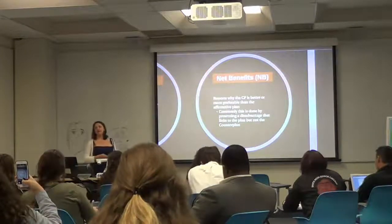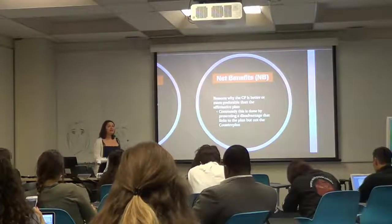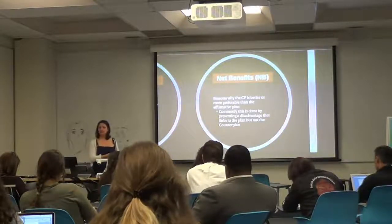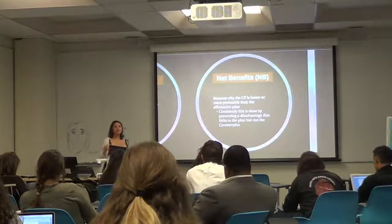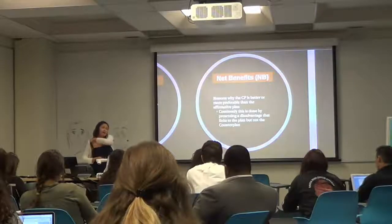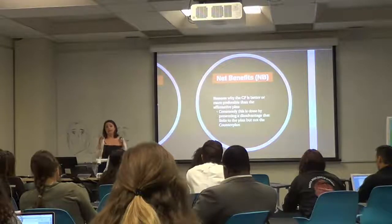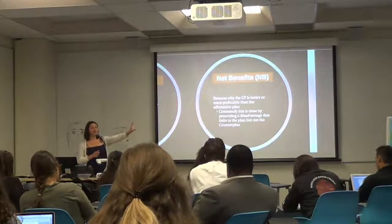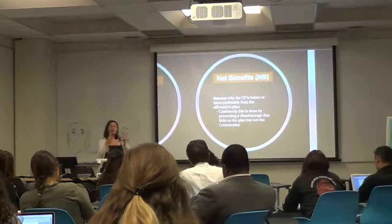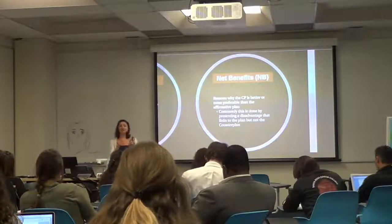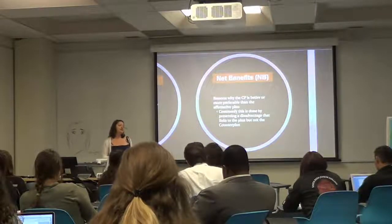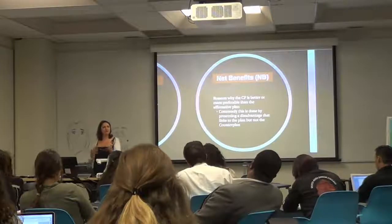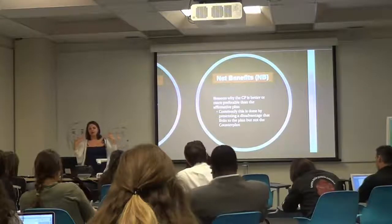You've got to have net benefits. Net benefits are like advantages to the counter plan — independent effects or reasons why the judge should prefer the counter plan over the affirmative plan. The most common way is a disadvantage or two as net benefits to the counter plan that are not net benefits to the plan. They are distinctly disadvantages to the plan by themselves. If you have two disadvantages and a counter plan in the debate, you have a route to success in three different places. Each disadvantage operates as an individual piece of offense, and then the counter plan operates as an alternative vote — the judge can vote for the counter plan instead of the plan.